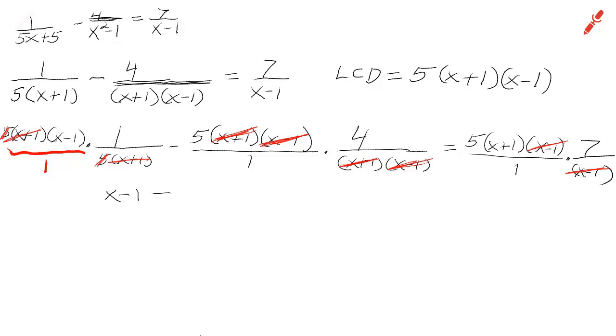This leaves me with x minus 1 minus 20 equals 5 times x plus 1 times 7, which is 35 times x plus 1. So I'll have x minus 21 equals 35x plus 35. I'll gather my variable terms together on the right side of the equation, leaving me with negative 21 on the left, 34x on the right.